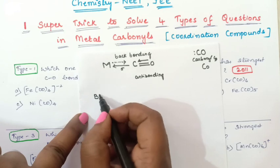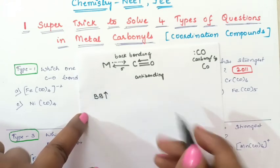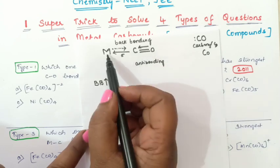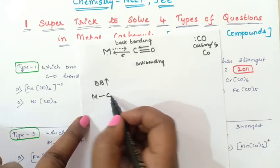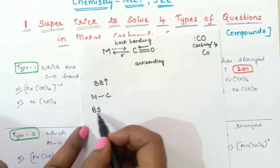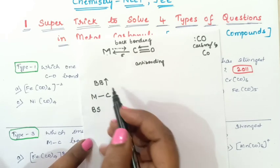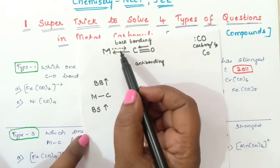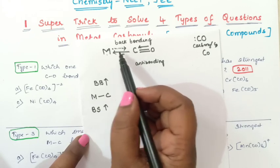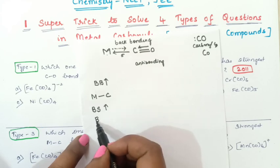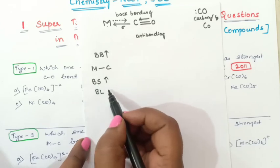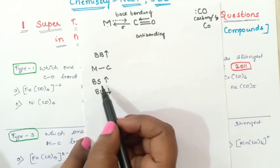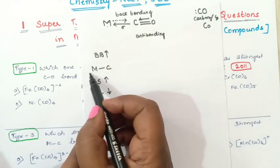When backbonding (BB) increases, what happens to the bond between M and C? The bond strength of MC will increase, because there is a partial double bond character. When bond strength increases, bond length will decrease, because both are inversely related to each other. So when backbonding increases, MC bond strength increases and MC bond length decreases.